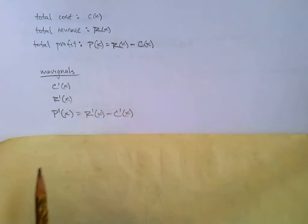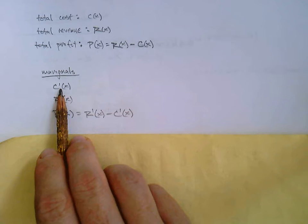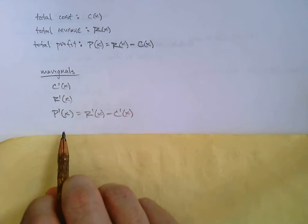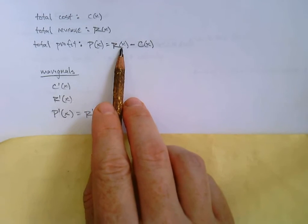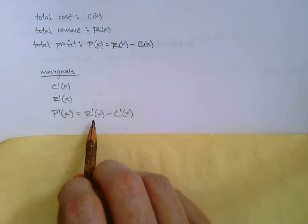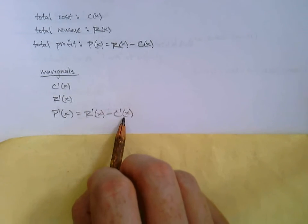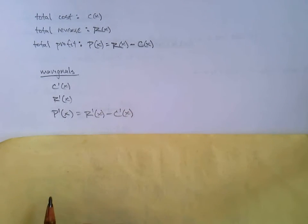P(x) being the total profit. Each one of these has a marginal, so there's the marginal cost, there's marginal revenue, and there's marginal profit. Now because marginal profit is R(x) minus C(x), you can also think of that as R prime of x minus C prime of x.